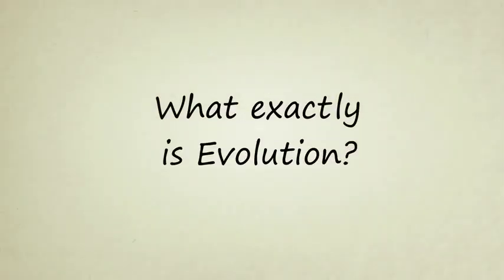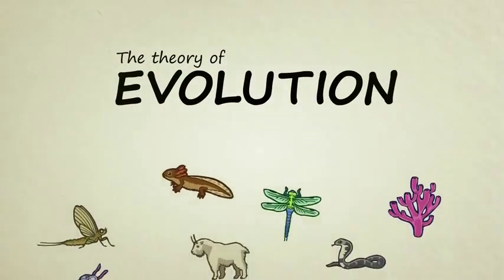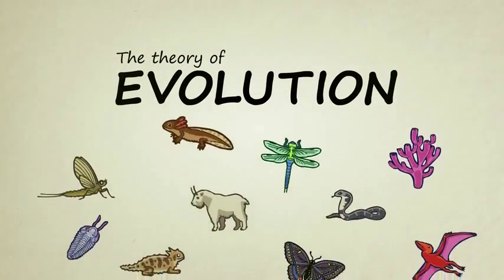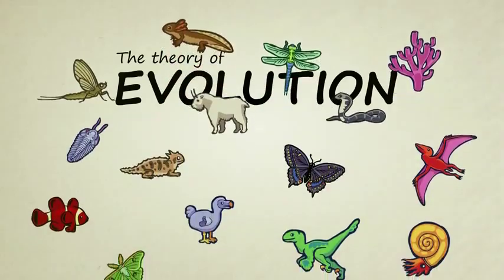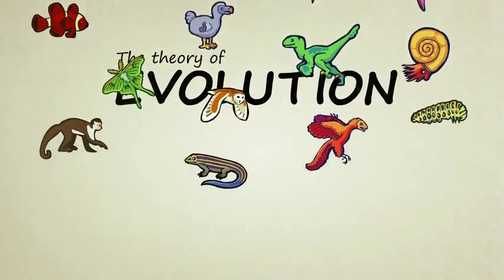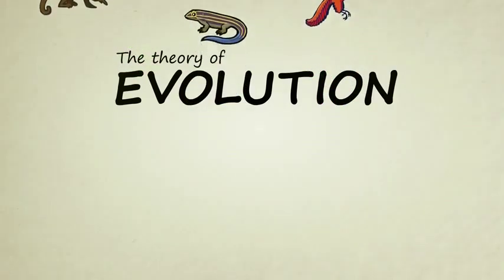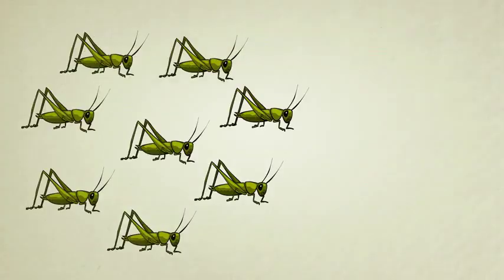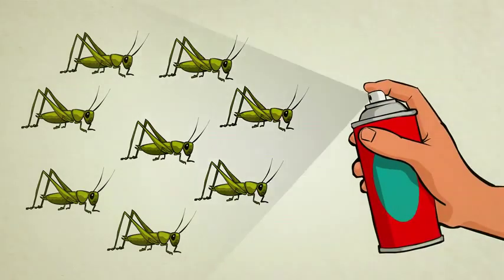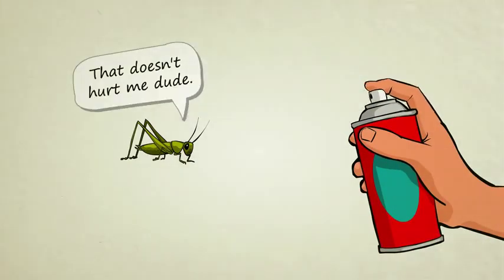What exactly is evolution? In biology, the theory of evolution doesn't tell us exactly how life began on Earth, but it helps us understand how life, once it came into existence, diversified into the many incredible forms we see now and in the fossil record. It also helps us make sense of the way in which modern creatures continue to adapt and change today.